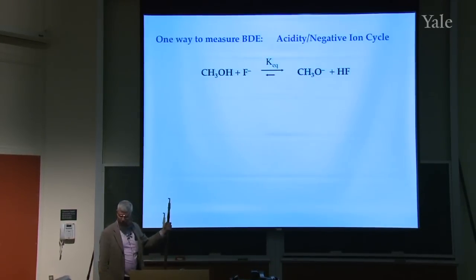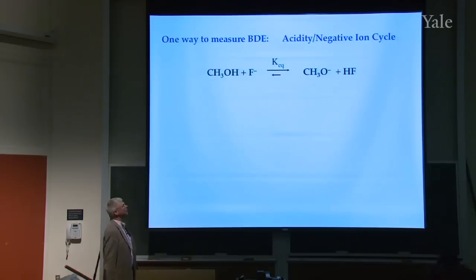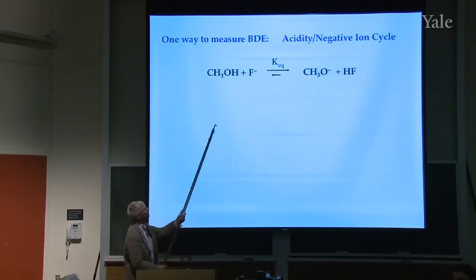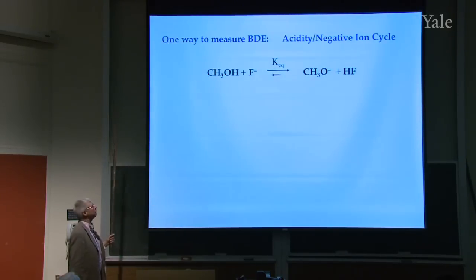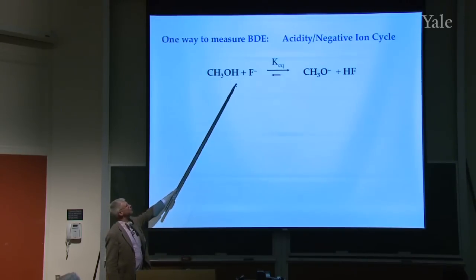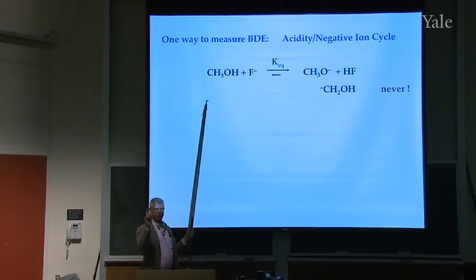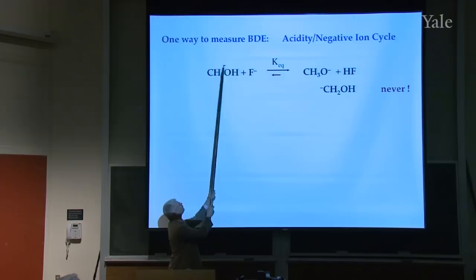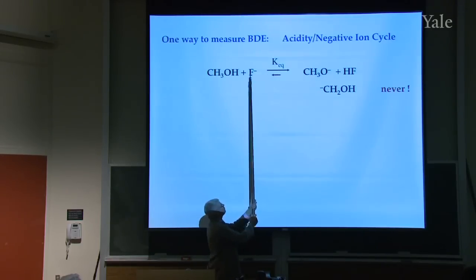One way you can do this is to use a gas phase acidity electronegativity cycle — a negative ion cycle. You take this molecule, say methanol, and if you treat it with a base such as fluoride ion, the fluoride ion is going to attack the methanol and pull a proton off. If it does that, you'll form methoxide ion. The fluoride ion will never pull the proton off the carbon, because the resulting negative ion has the electron on carbon, and oxygen is more electronegative. So you'll always get the methoxide ion.